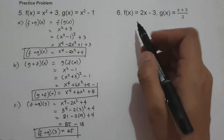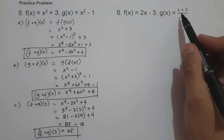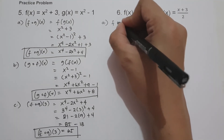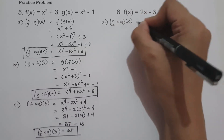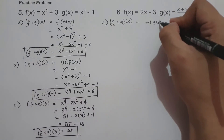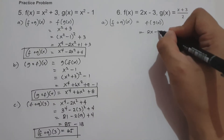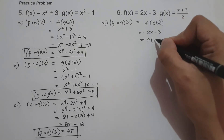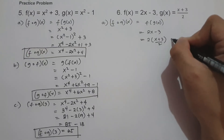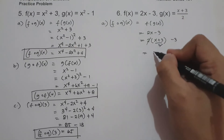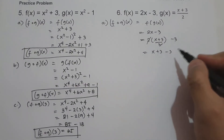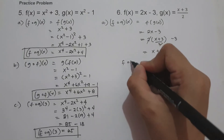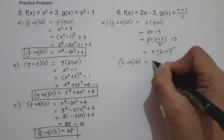On number 6, f of x equals 2x minus 3 and g of x equals x plus 3 all over 2. Let us find the value of f circle of g of x, and this will be f of g of x. f of x is 2x minus 3, and the value of x is g of x, which is x plus 3 all over 2. So this will be 2 times x plus 3 all over 2 minus 3. The 2s cancel, leaving x plus 3 minus 3, and 3 minus 3 is 0. So the value of f circle of g of x is x.